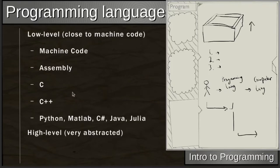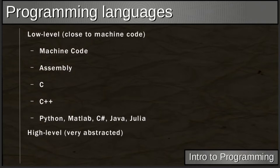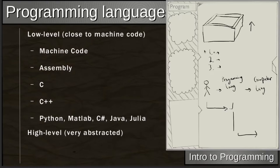Programming languages range from low-level to high-level. Low-level means closer to machine code, while high-level is closer to how we think — more abstracted from the computer. There are all sorts of variants in between. High-level is more abstracted from the computer language, whereas low-level is more directly what the computer wants to interpret.